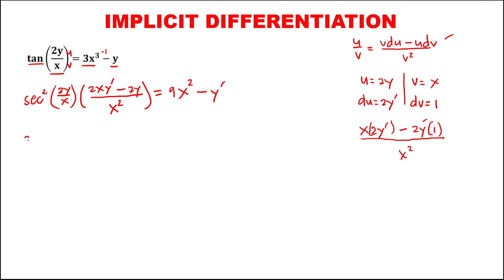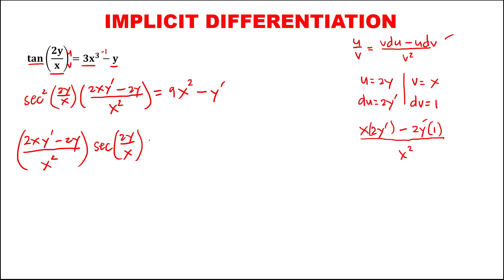Then to simplify, so this becomes: 2xy prime minus 2y over x squared, times secant squared of 2y over x, equals 9x squared minus y prime. To solve for y prime, first we need to simplify this equation.